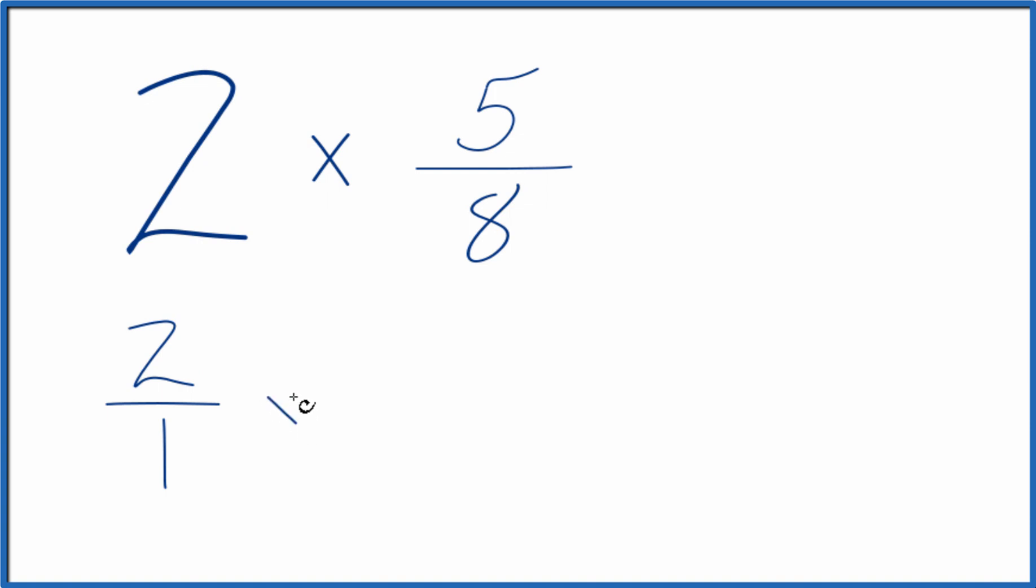We can multiply the fraction by 5 eighths. When we multiply fractions, we multiply the numerators, then the denominators. 2 times 5 is 10. 1 times 8 is 8. We said that simplifies to 5 fourths.